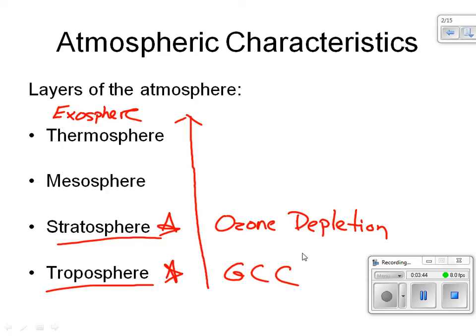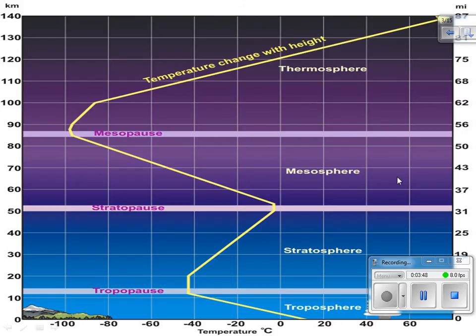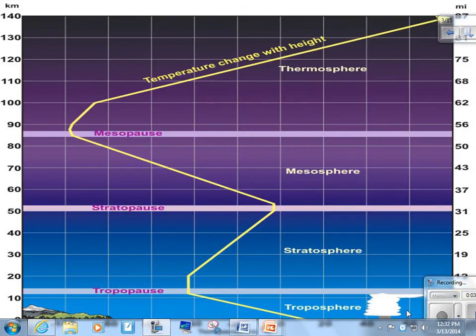So why do we have these distinctive layers of our atmosphere? I think the underlying reason are changes in temperature. So every time the temperature changes, as in whether it's increasing or decreasing, it creates sort of a new atmospheric layer.